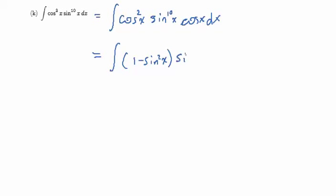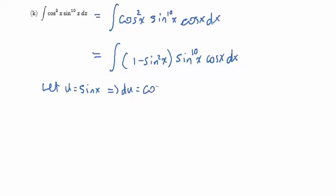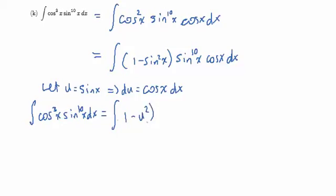That is sine to the power of 10x times cos x dx. So letting u be sine x, then du becomes cos x dx. The original integral becomes the integral of 1 minus u squared times u to the power of 10 du, which gives us u to the power of 10 minus u to the power of 12 du.